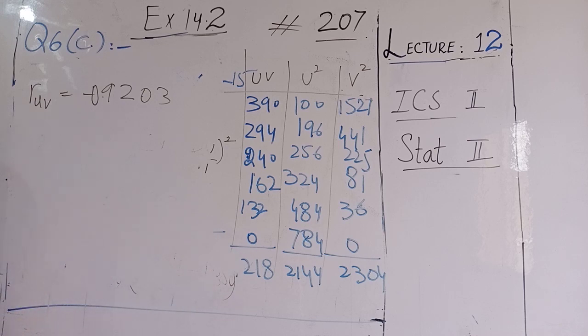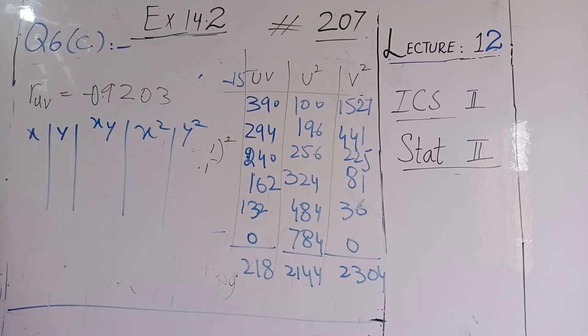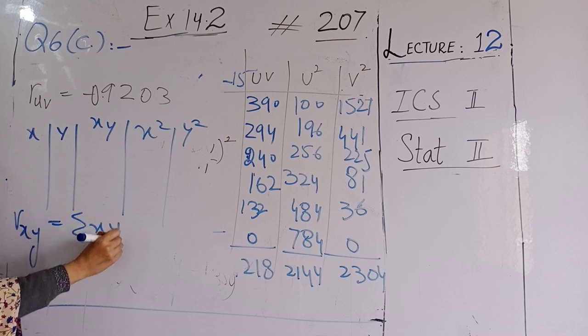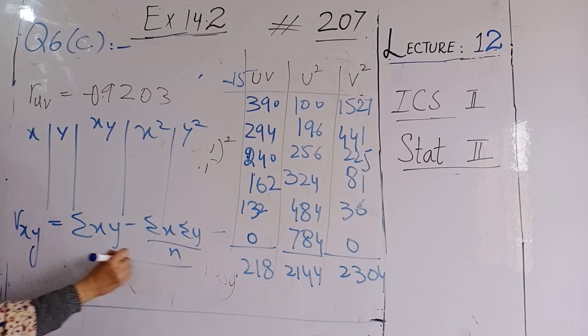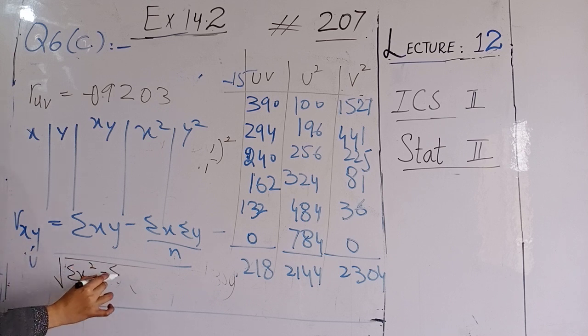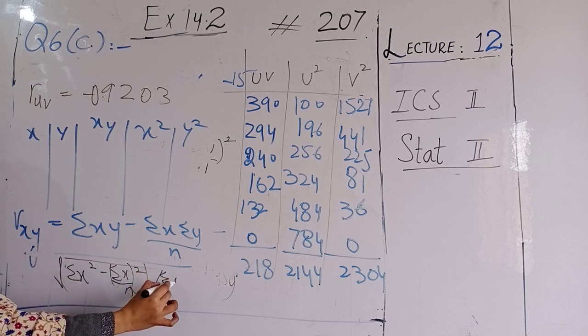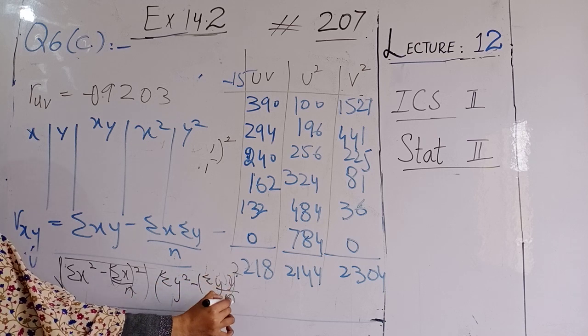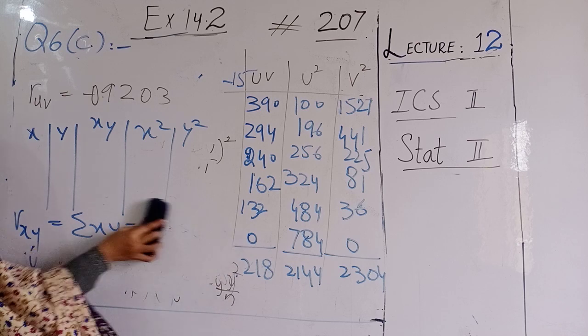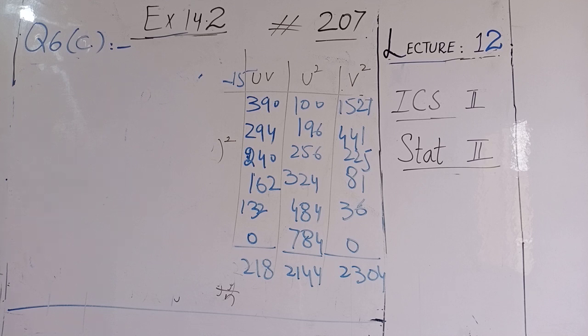We will use the formula r_xy equals summation xy minus summation x summation y divided by n, divided by square root summation x square minus summation x square divided by n, summation y square minus summation y whole square divided by n. This formula we have used and solved the question. The answer is the same here, minus 0.92. We obtain the same result. So here our question complete. Dua, Allah Hafiz.